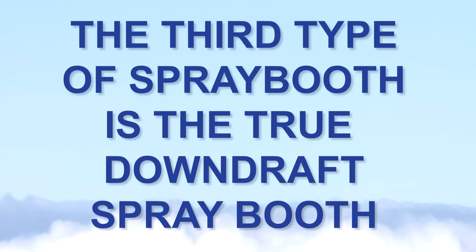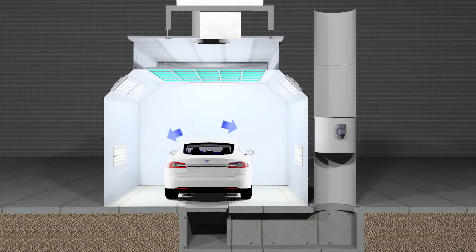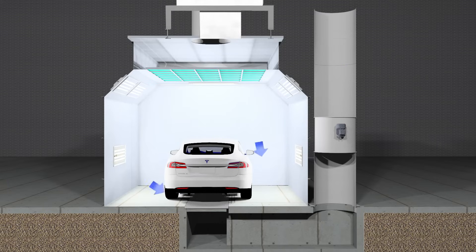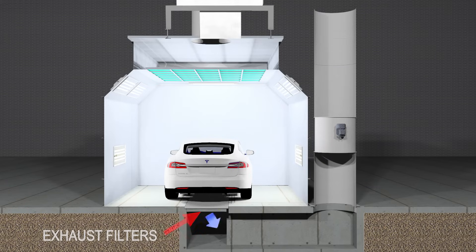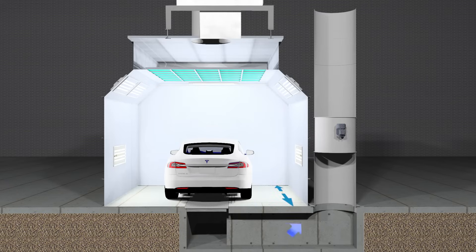The third and the best type of spray booth for any spray painting application is the true downdraft spray booth. Similar to the modified downdraft spray booth, it has its intake or incoming air coming directly above the product being painted. But the difference in the true downdraft airflow is the exhaust filters are directly below the product being painted. Since in almost every situation the height of a spray booth is going to be shorter than its length, that air coming from the ceiling and going directly to the floor under the product being sprayed has a shorter distance to travel.